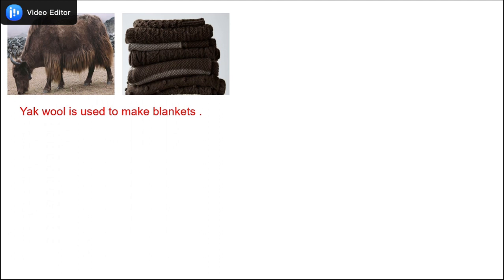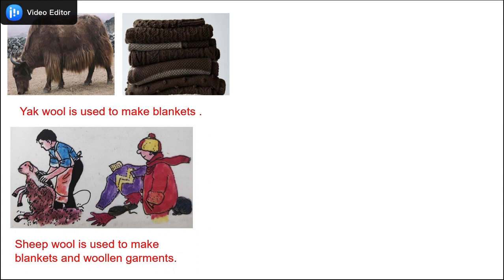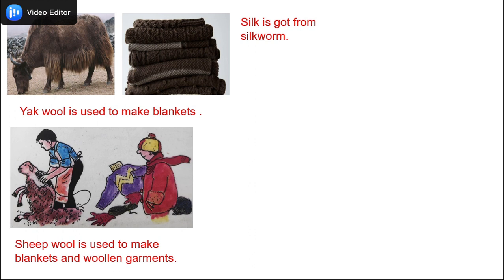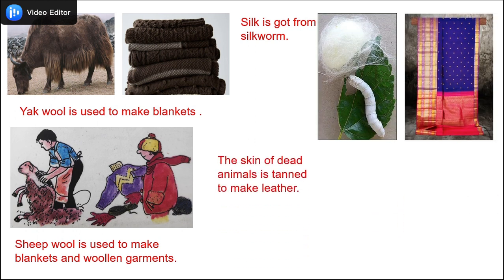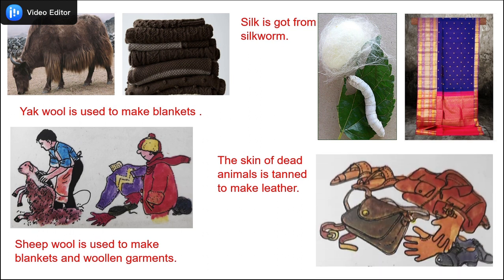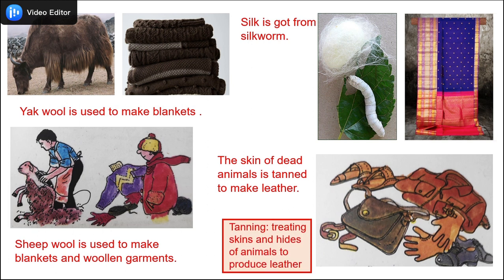Here you can see a yak — yak wool is used to make blankets and other woolen garments. Sheep wool is also used to make blankets and woolen garments. Silk is obtained from the silkworm. The skin of dead animals is tanned to make leather — so we also get clothes from animals. We learn a new word: tanning — treating the skins and hides of animals to produce leather is called tanning.